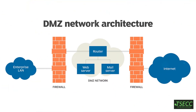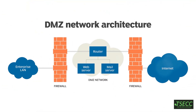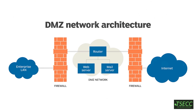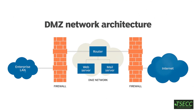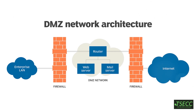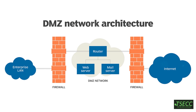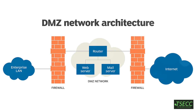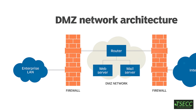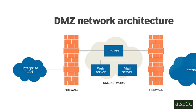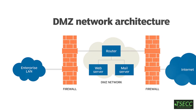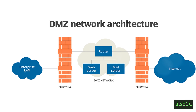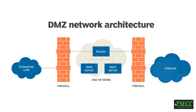Picture this. You've got two firewalls. The first one sits between the internet and your DMZ, filtering incoming traffic to only allow requests to your public-facing services. The second firewall is between your DMZ and your private network, stopping bad actors from sneaking into your critical systems.